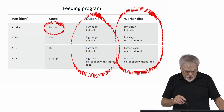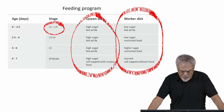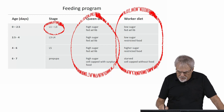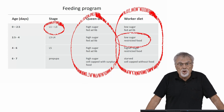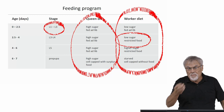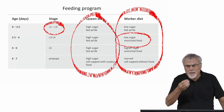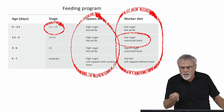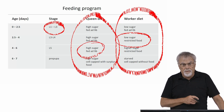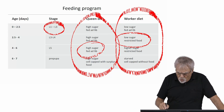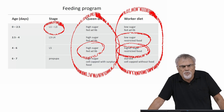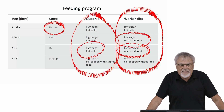In the third to fourth larval instars, the queen continues to receive ad lib feeding at high sugar content. The worker diet changes — it stays low sugar, but now it is restricted, delivered just intermittently from mouth to mouth, so the larvae are not getting all that they want. They are crying out with their pheromones saying 'feed me,' but they receive a restricted diet compared to what the queens are getting.